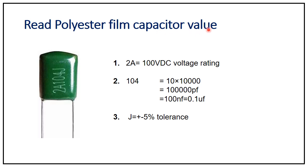For another polyester film capacitor example — the capacitor code is divided into 3 sections: the first 2 characters represent voltage rating, the next 3 represent capacitance value, and the last 1 represents tolerance. Here '2A' equals 100V DC, which we can verify from the capacitor voltage code table.